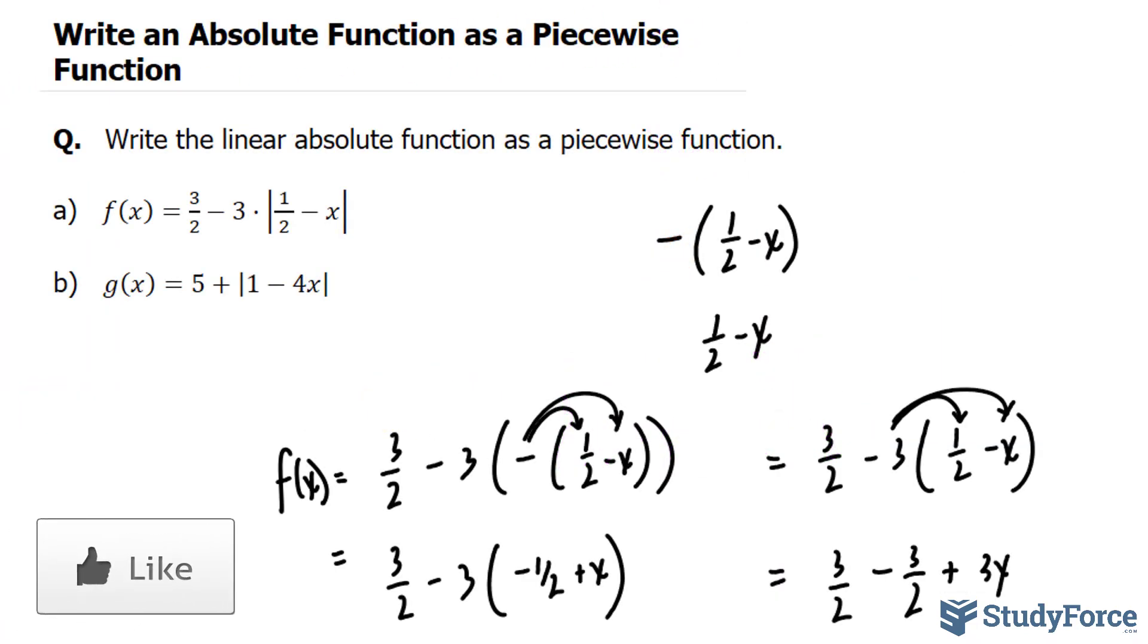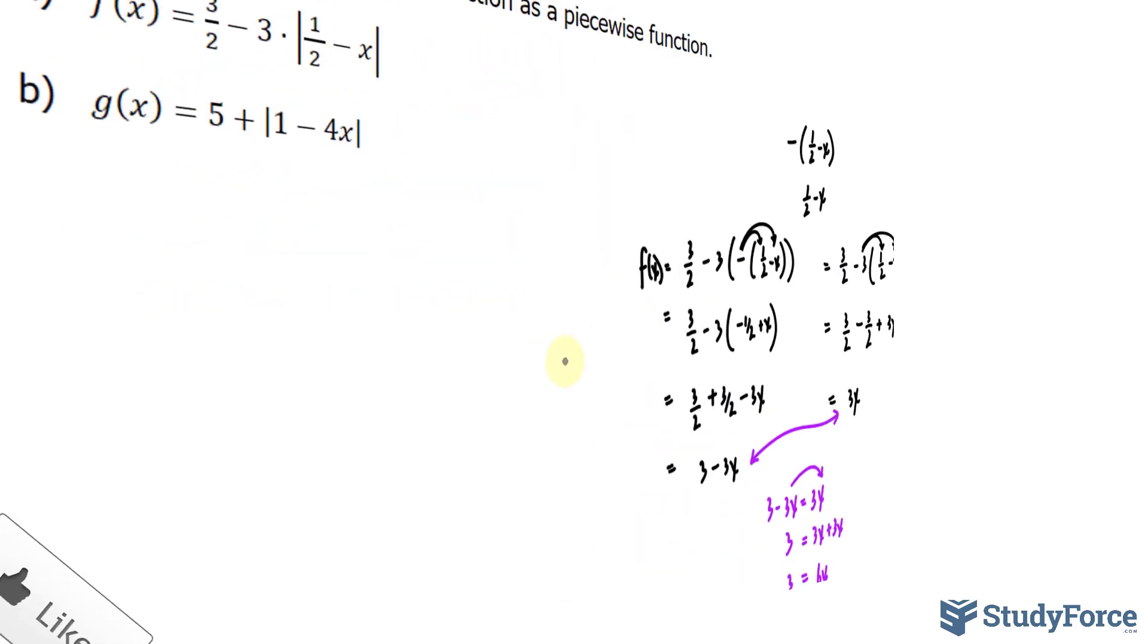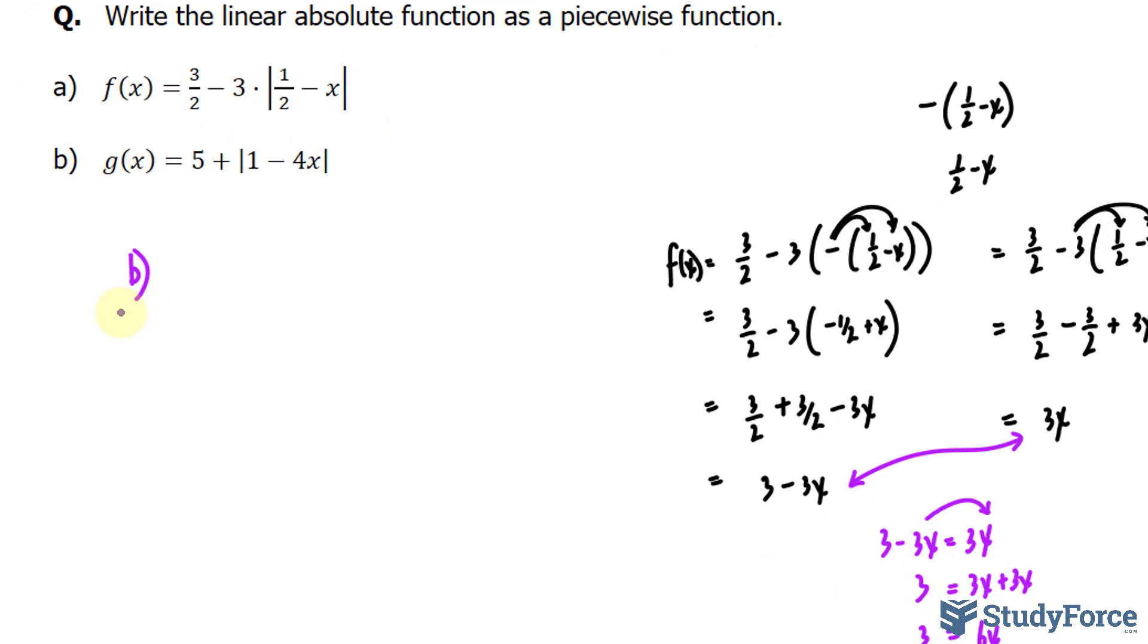Let's quickly do example B, just so that we have a good understanding of what's happening. I've put aside my work for A, and now we will do question B. So this can be written in two ways. We can write it as g of x is equal to 5 plus the negative version of that expression. And g of x is equal to 5 plus the positive version of that expression.